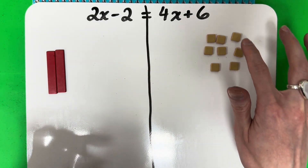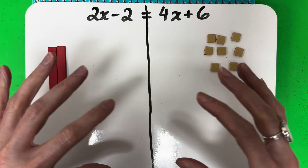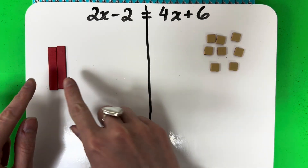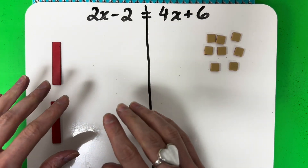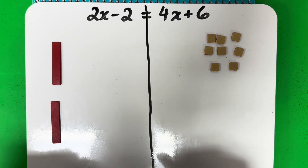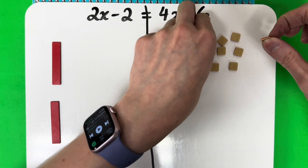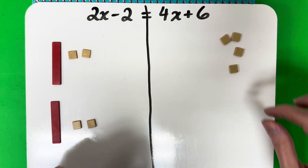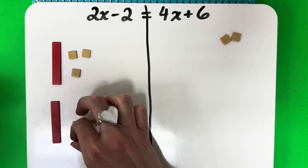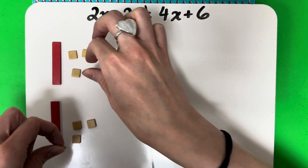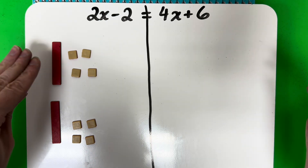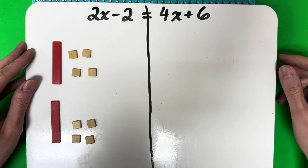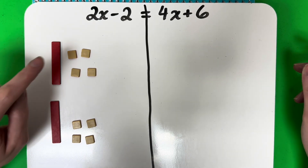So I have negative 2x here, and then 8 squares on the right. Now what we're going to do is divide them — basically, I want to know how many squares I can give each rectangle so they have the same amount. So I'm going to distribute them: each rectangle can have four small squares.